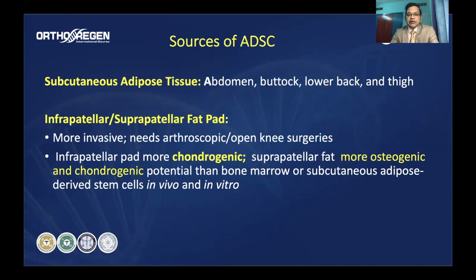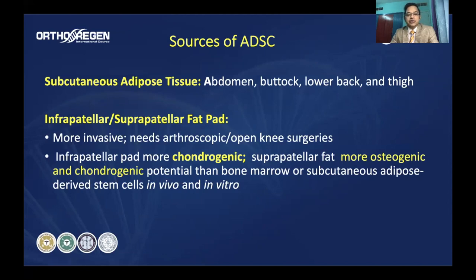The most common source of adipose-derived stem cells is subcutaneous adipose tissue — from the abdomen, buttock, lower back, or thigh. More recently, cells can also be obtained from the infrapatellar and suprapatellar fat pad areas, though these involve invasive procedures during arthroscopic or open knee surgeries. Those who have used these sources propose that infrapatellar fat is more chondrogenic, favoring cartilage formation, while suprapatellar fat is more osteogenic and chondrogenic than bone marrow or subcutaneous sources.